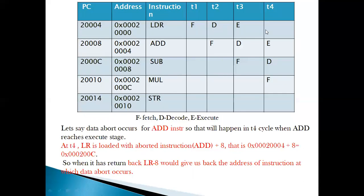At time T1, the LDR instruction is being fetched from address 0x2000. The program counter is already pointing to the next address to be fetched, which is at 0x2004. At T2, the LDR moves into decode stage while the next instruction — which the program counter was pointing to — is being fetched. The program counter is always ahead by one instruction ahead of what is being decoded.